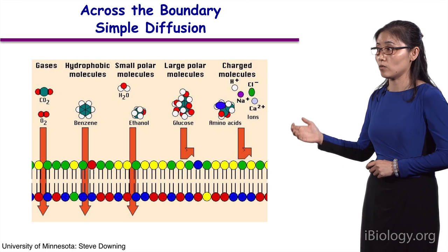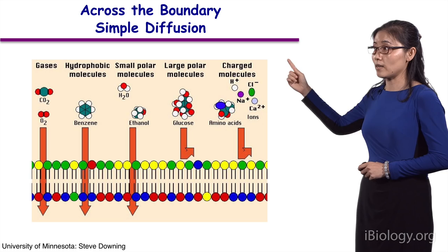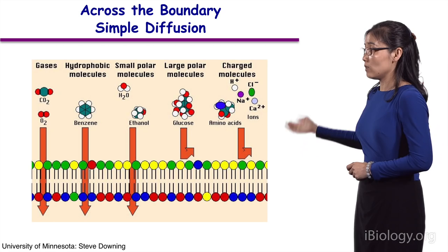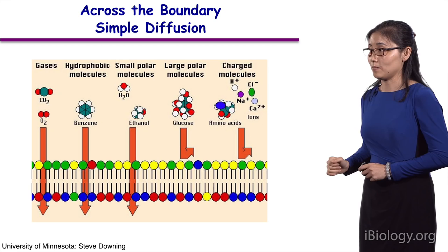Some small molecules such as water, glycerol, gas molecules, or small hydrophobic molecules are allowed to go freely across this boundary — this is known as simple diffusion. But for the large majority of chemicals, exemplified by glucose, amino acids, and nucleosides, especially those charged ions, they cannot penetrate this bilayer. Therefore, they necessitate a specific transport mechanism.